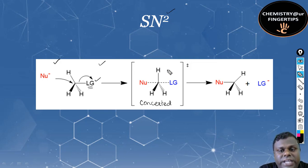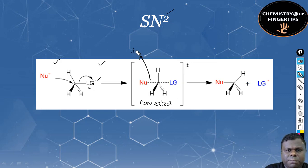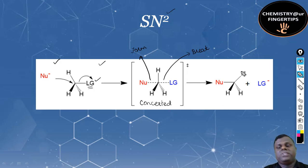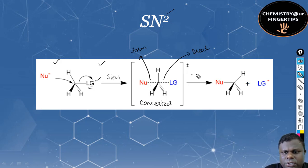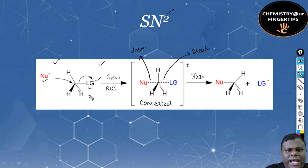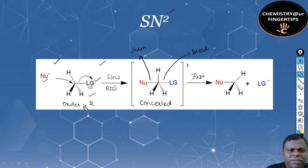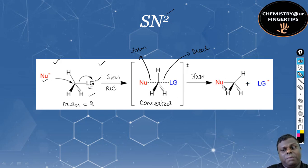When the nucleophile attacks, it gives us a concerted step. A concerted mechanism is a highly unstable transition state in which bond formation and bond breaking take place simultaneously. Bond formation occurs as the nucleophile approaches, and bond breaking occurs as the leaving group departs. This is the slow, rate-determining step. Since both the nucleophile and the substrate are involved, the order of the reaction is two.